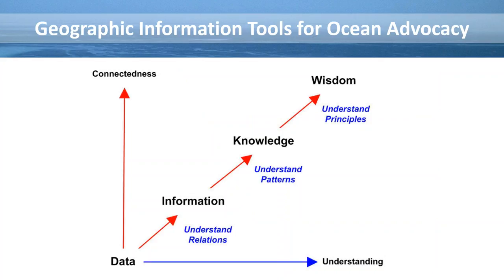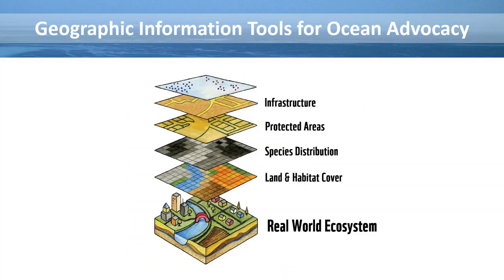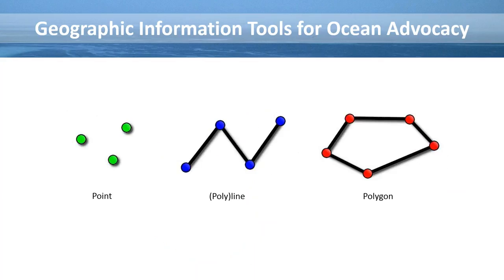Even if you look into the patterns in that information, it can give you knowledge — like what is happening in my environment. Within GIS, we typically split this up per layer. You see here a terrestrial example where we split up the infrastructure, protected areas, species, and so on. That gives us an approximation of the real-world ecosystem and helps us understand it better — we split it up so we can better assess what's going on, to understand patterns and relationships in geographic information systems.